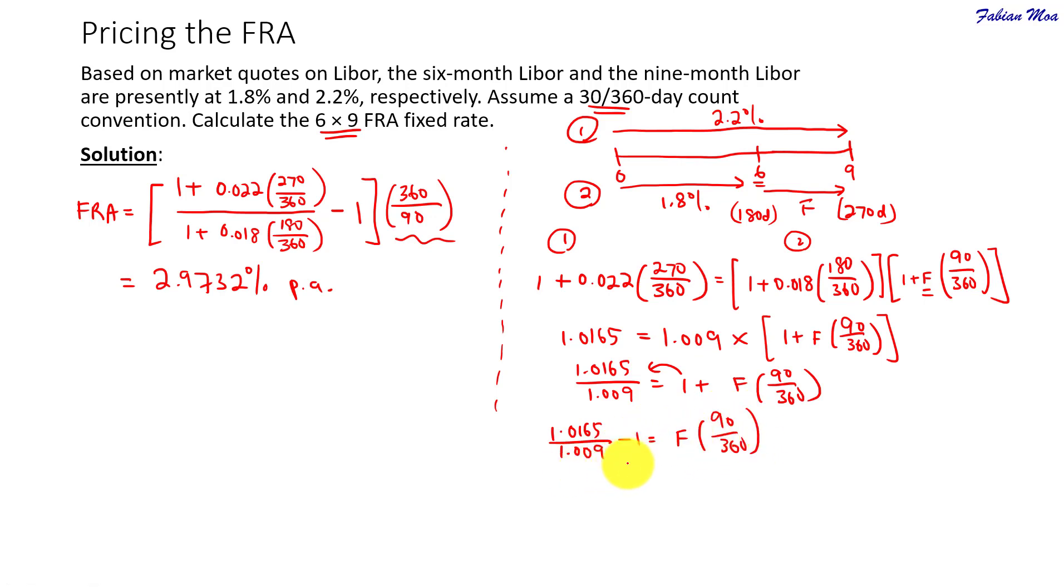So, what we get here is the quarterly, the 3 months FRA rate. So, lastly, your FRA rate here will be equals to 1.0165 over 1.009 minus 1. And then we inverse it over. So, this becomes 360 over 90. Okay, which is exactly what we did here.